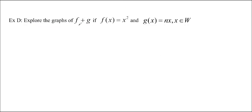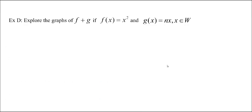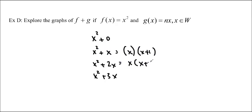Let's do one more. We want to explore the graphs of f plus g if f of x equals x squared and g of x equals nx. We're doing x squared plus 0, x squared plus x, x squared plus 2x, and so forth. We know what x squared plus x looks like. If we factor it, it's x times x plus 1. So we expect our zeros to be 0 and negative 1. Here we get x times x plus 2, so 0 and negative 2. x times x plus 3, 0 and negative 3. So we can really look at the family of functions by just messing around with the addition of these functions.